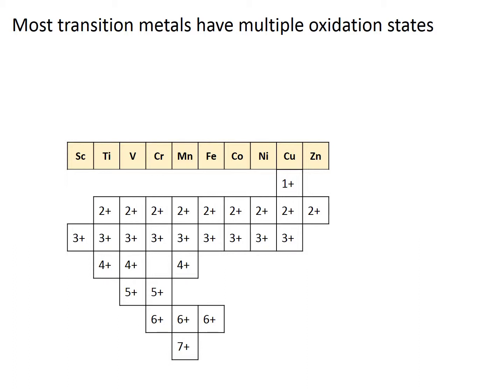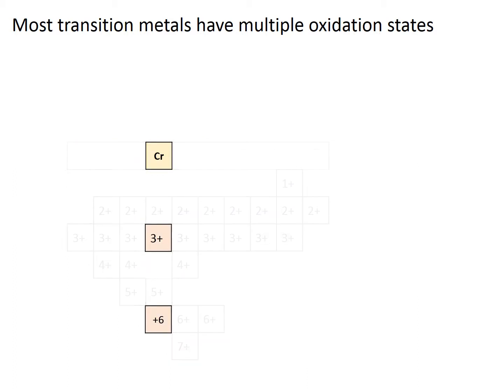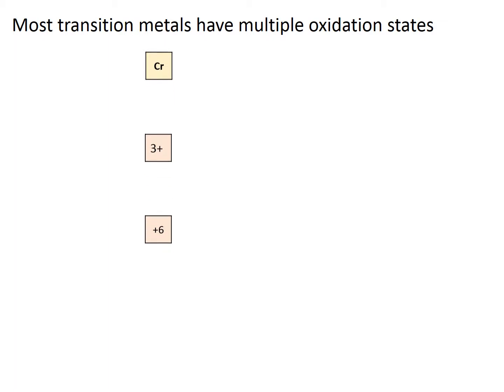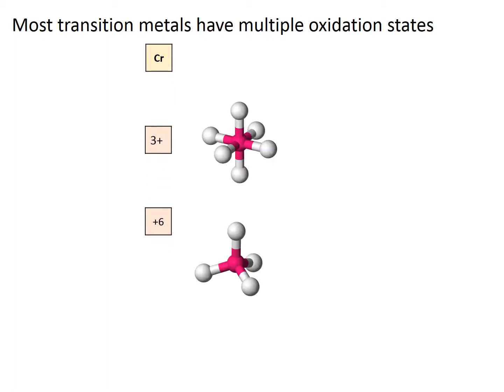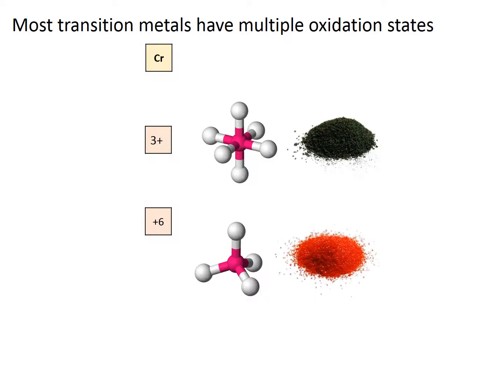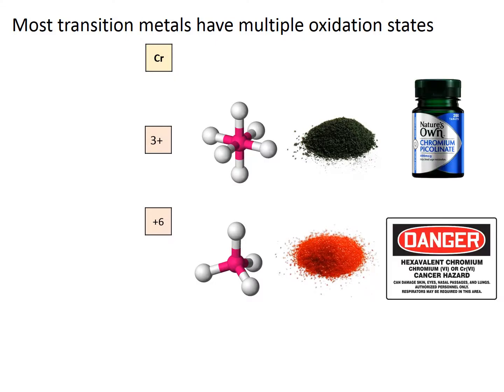For example, let's look at two oxidation states of chromium: chromium-3 and chromium-6. Chromium-3 complexes are octahedral, while chromium-6 complexes are tetrahedral. Chromium-6 complexes tend to be more brightly coloured than chromium-3. And while chromium-3 is an essential metal, sometimes prescribed as a dietary supplement, chromium-6 is carcinogenic.